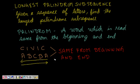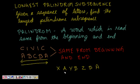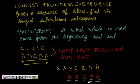Given some sequence of letters like X-A-Y-B-Z-B-A, we have to find the longest palindrome subsequence. One subsequence is A-B-B-A, and in fact A-B-Z-B-A also works because A-B-Z-B-A reads the same from beginning or end. So A-B-Z-B-A is a palindromic subsequence in X-A-Y-B-Z-B-A. The problem is how to find the longest palindrome subsequence.